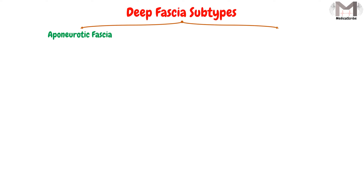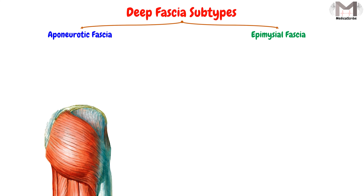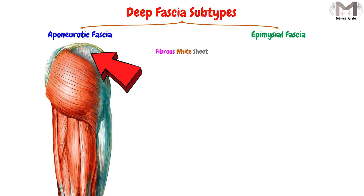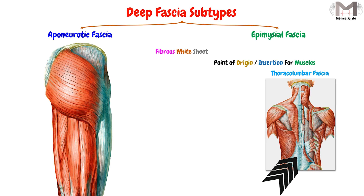There is also a classification that divides the deep fascia into two subtypes. The first is the aponeurotic fascia, which is a fibrous white sheet. This aponeurosis can be a point of origin or insertion for the muscles, such as the thoracolumbar fascia. This subtype is thicker than the second type and can be easily separated from the underlying muscle layer.